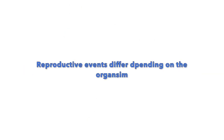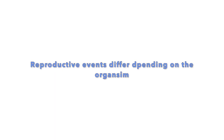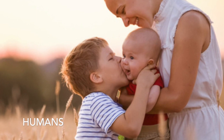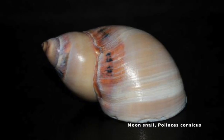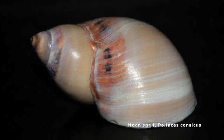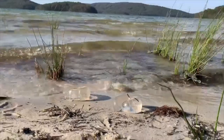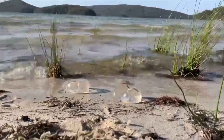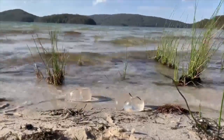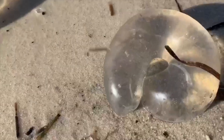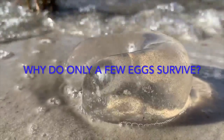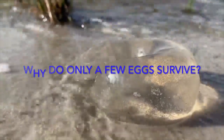For instance, the reproductive strategies of moon snails and humans significantly differ. Humans have fewer successful reproductive events in their lifetime, whilst moon snails are on the extremes of the life history continuum. These mothers produce plump, translucent egg masses which encase tens of thousands of tiny little eggs or black-looking specks. So, why does so little offspring survive from the thousands of eggs?